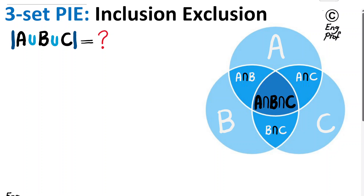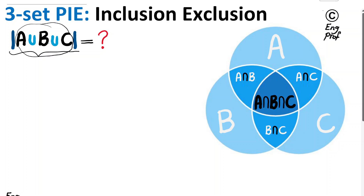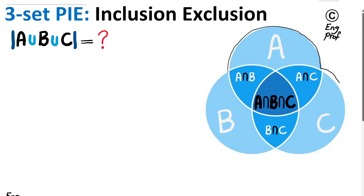A simple proof is provided in this video for the 3-set principle of inclusion-exclusion, which is basically trying to show that the number of elements, or cardinality, of the union of 3 sets is equal to a specific formula. We are trying to find the number of elements in the union of 3 sets A, B, C as shown here.